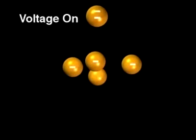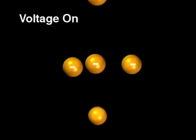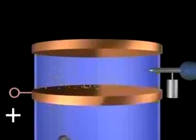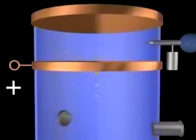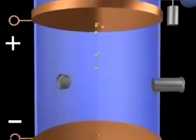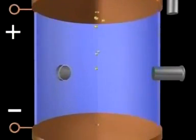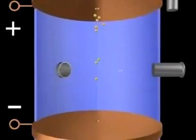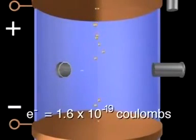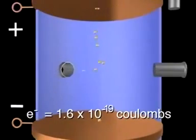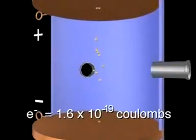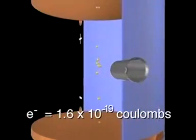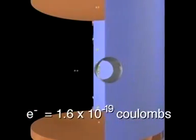By adjusting the applied voltage and observing the droplets both with voltage off and voltage on, Millikan was able to determine that the charges on the droplets were all multiples of a smallest value: 1.6 times 10 to the minus 19th coulombs. He took this to be the charge on a single electron.